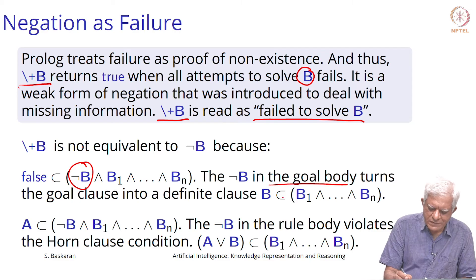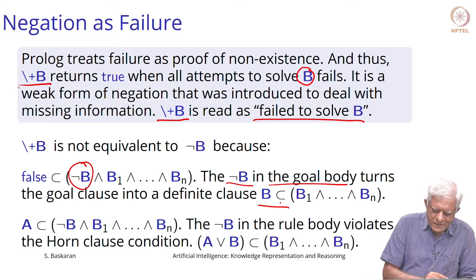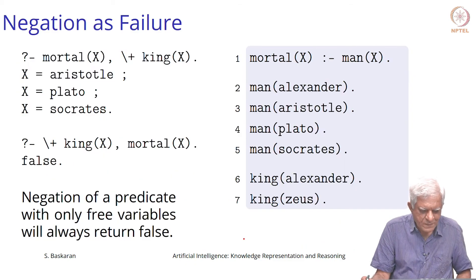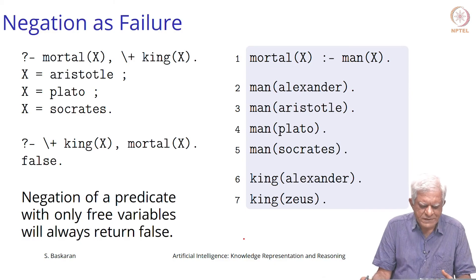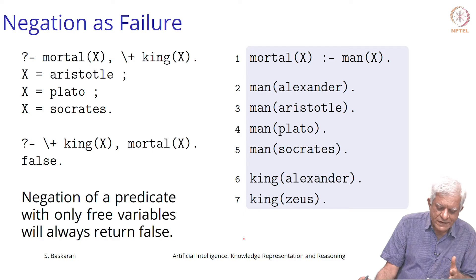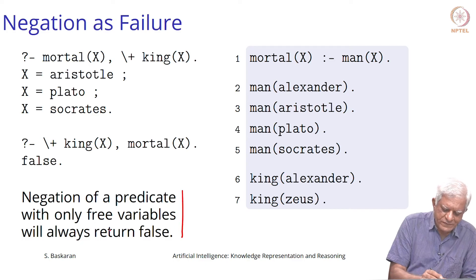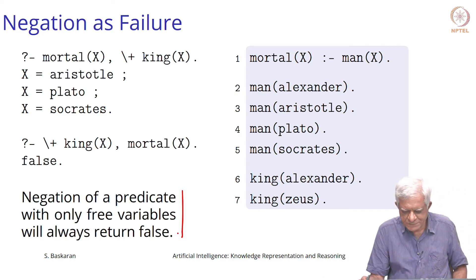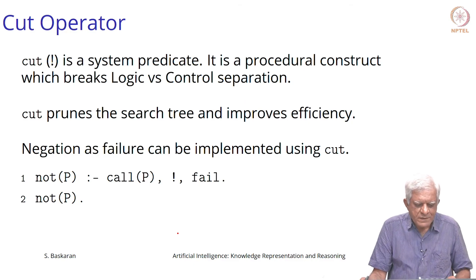A negation in the goal body turns the clause into a definite clause — it is no longer a Horn clause. This is why asking 'is there somebody who is not a king and who is mortal?' did not work: the negation of a predicate with only free variables will always return false.